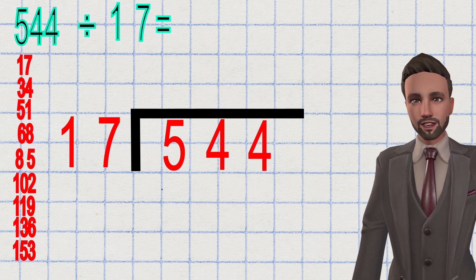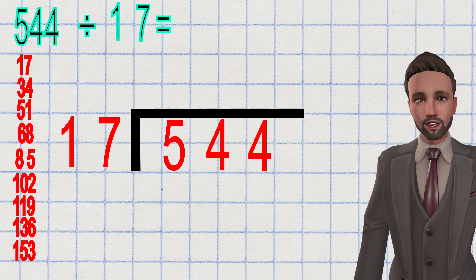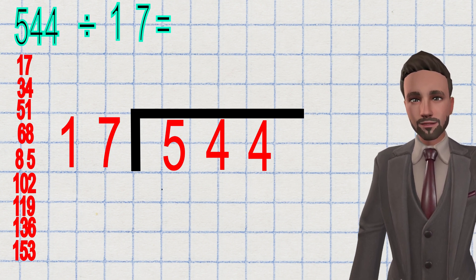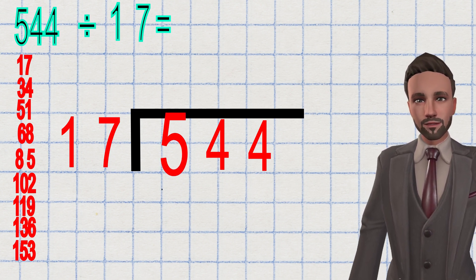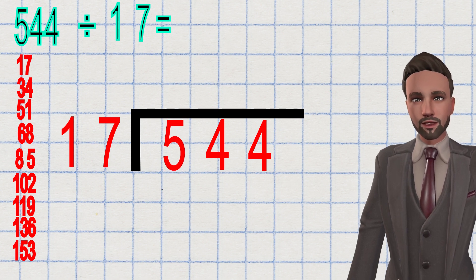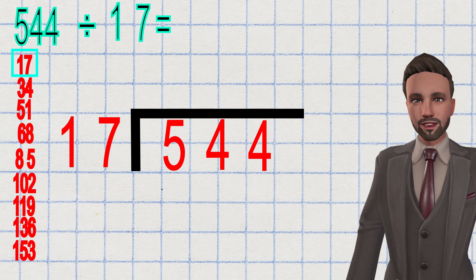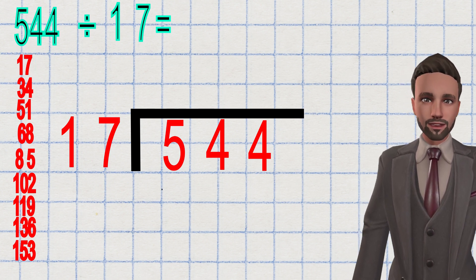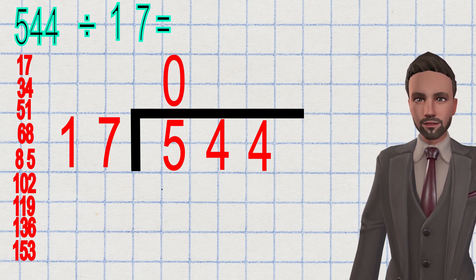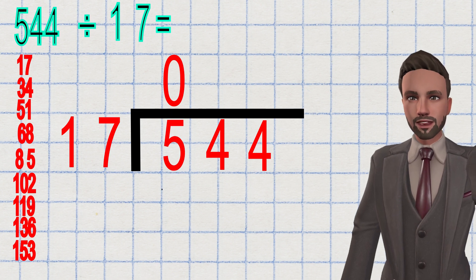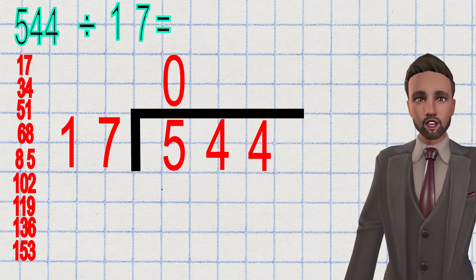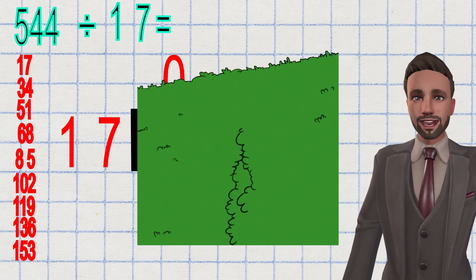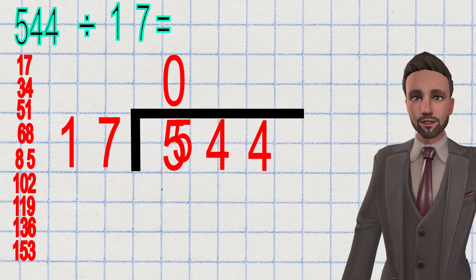Now just like the bus stop method you're familiar with, you're starting on the first digit. The first digit is 5. How many times does 17 go into 5? Well, my first multiple of 17 is already bigger than 5, so my answer is zero. I place my zero on top. But I never used the 5, so the 5 still remains. It doesn't just disappear. I need to carry that along just like I would with single digit division.